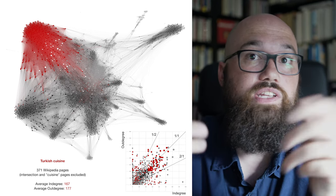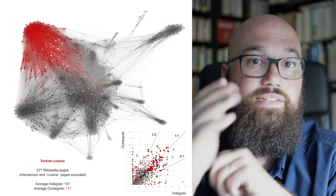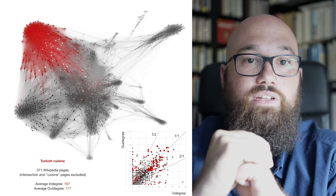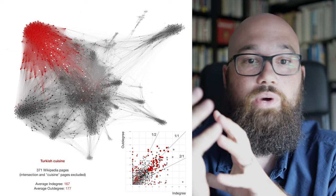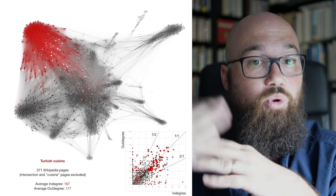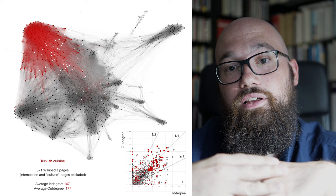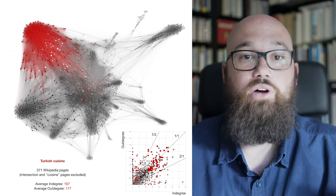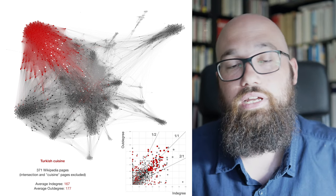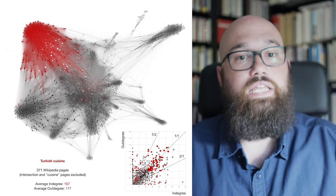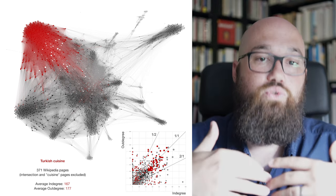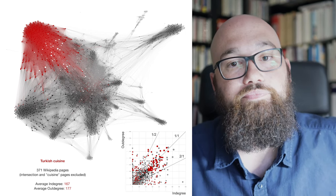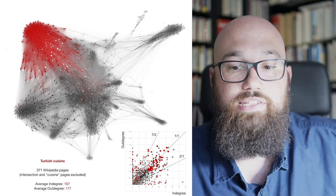And it's very interesting to see that this Turkish cuisine sub-network is the only one where the average in-degree is smaller than the average out-degree, which means that there are more links from these pages to all of the pages about European cuisine in this network than links that come from European cuisine to Turkish cuisine. So that's an interesting insight.